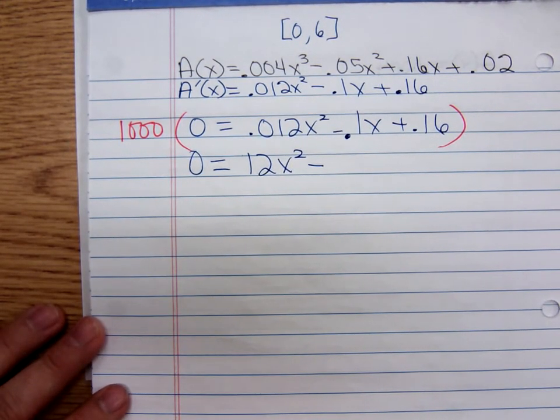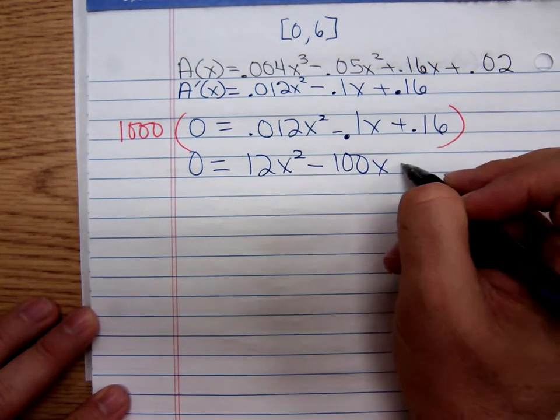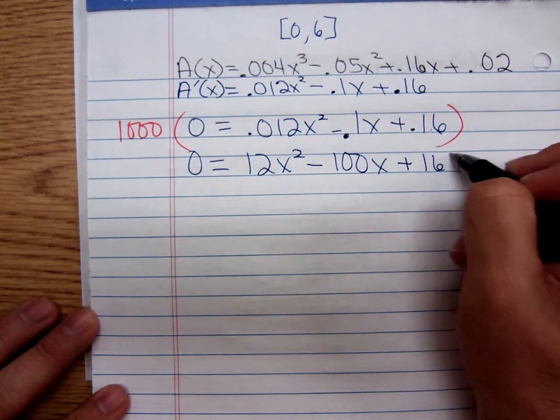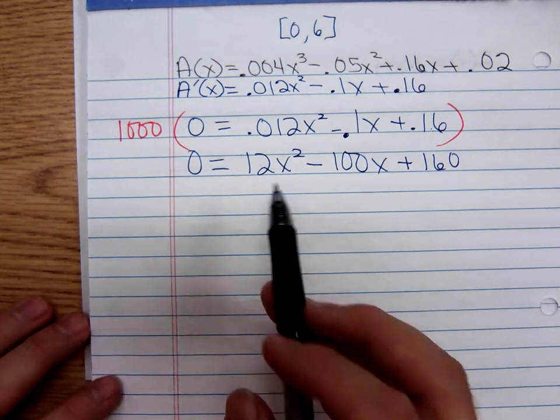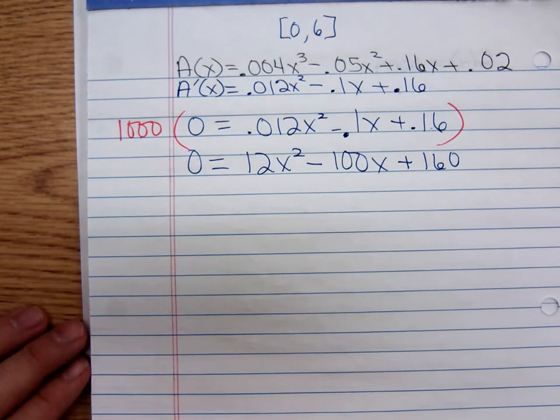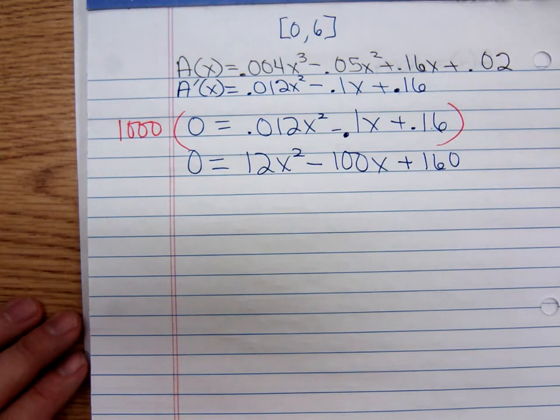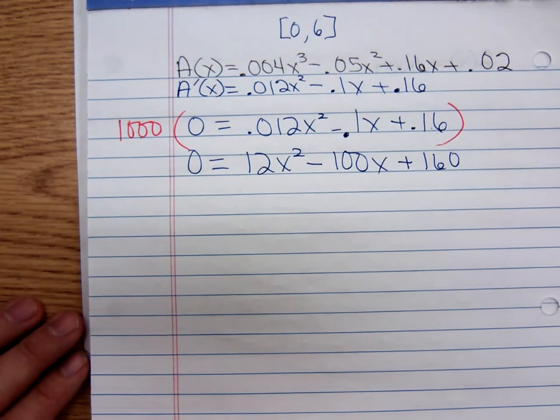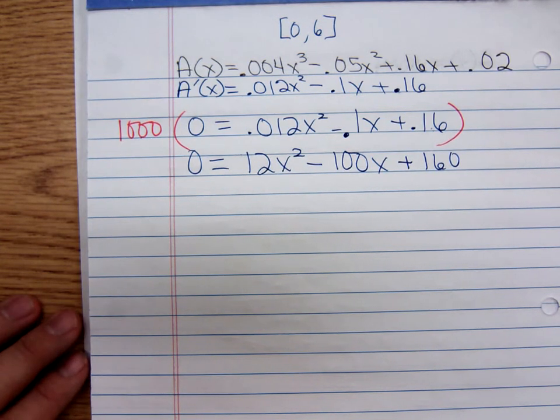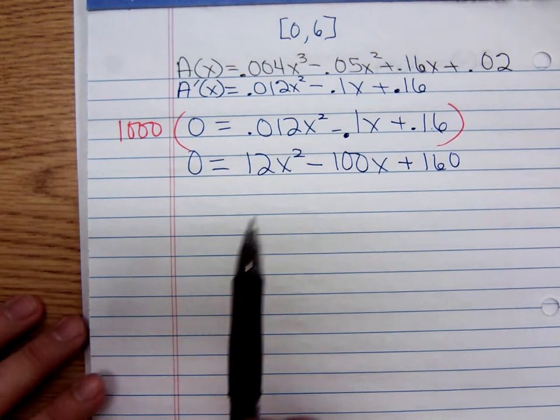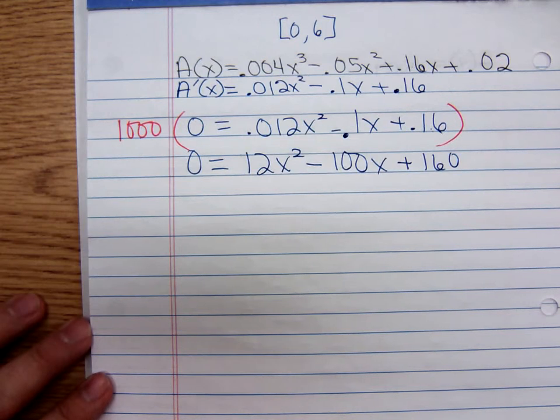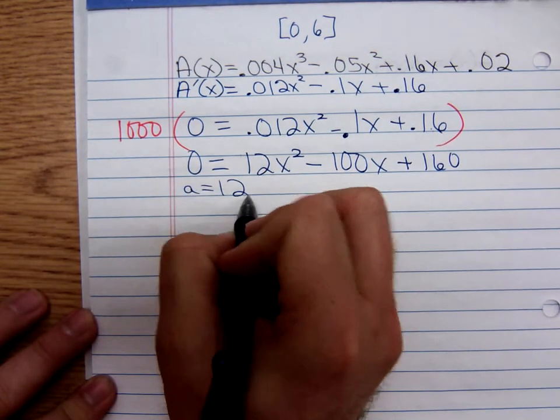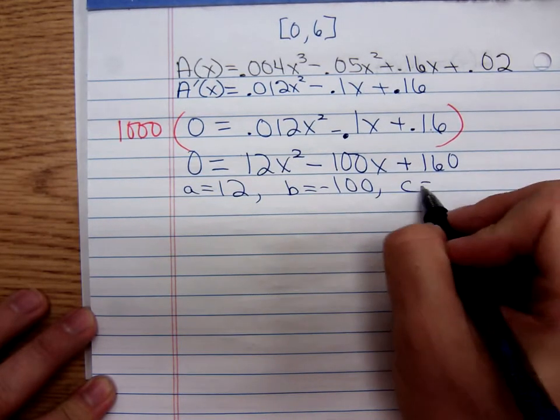Multiplying by one thousand moves the decimal point three places to the right. Multiplying through by one thousand gives us 0 = 12x² - 100x + 160. There's a common factor—those numbers are all divisible by two, divisible by four. We could shrink those down by getting rid of the common factor of four if we wanted to. But just because I have a common factor doesn't mean your problem's going to have one.